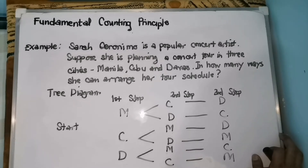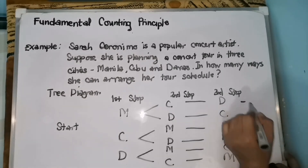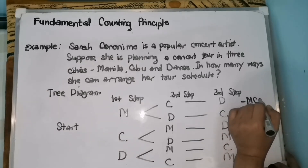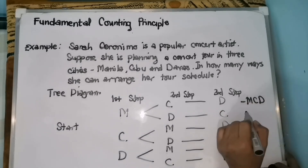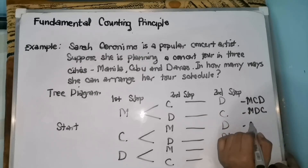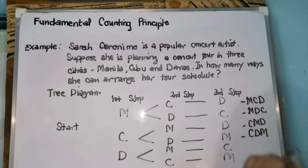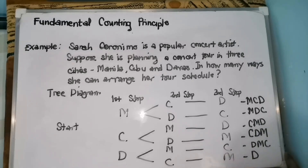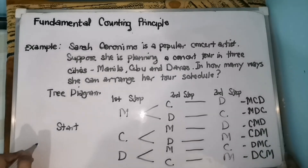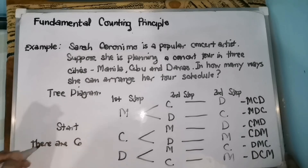The possible tour schedules in this compound event are as follows: Manila-Cebu-Davao, Manila-Davao-Cebu, Cebu-Manila-Davao, Cebu-Davao-Manila, Davao-Manila-Cebu, and Davao-Cebu-Manila. Therefore, there are six possible tour schedules.